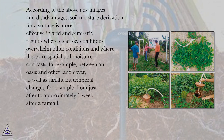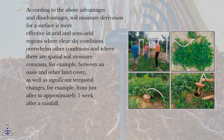According to the above advantages and disadvantages, soil moisture derivation for a surface is more effective in arid and semi-arid regions where clear sky conditions overwhelm other conditions and where there are spatial soil moisture contrasts — for example, between an oasis and other land cover — as well as significant temporal changes, for example, from just after to approximately one week after a rainfall.